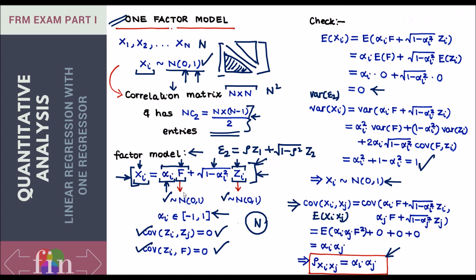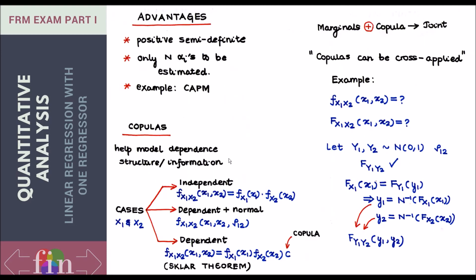What other benefits does this model have? First benefit is because you've used this model, you can be sure that the correlations that you finally arrive at, which is simply alpha i alpha j, they create a matrix which is positive semi-definite. This is a very good property to have. The second one I've already told you: from this data burden of n into n minus 1 by 2, you have now moved to only estimating n coefficients. That's it and this will help you populate your entire correlation matrix.